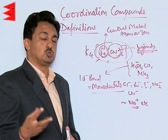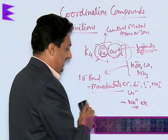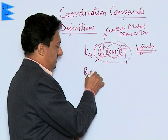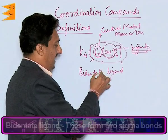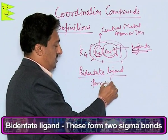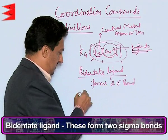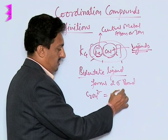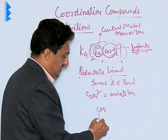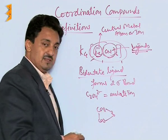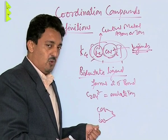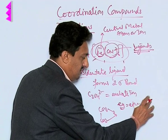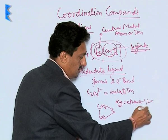If a ligand can donate two pairs of electrons at one time, we call it a bidentate ligand. Bidentate, as the name suggests, is a ligand which forms two sigma bonds simultaneously. The best example is C₂O₄²⁻, the oxalate ion. Through its two oxygen atoms, it can donate one pair each and form two coordinate bonds simultaneously.